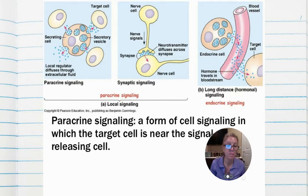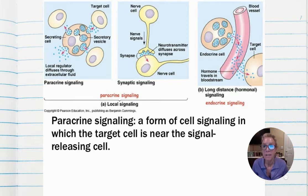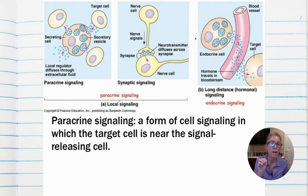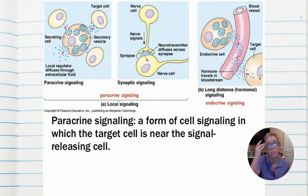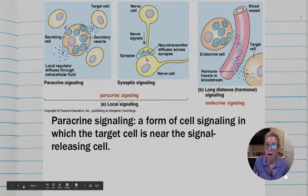Here's another example of signaling types. Paracrine signaling impacts only neighboring cells. A synapse between two neurons is very short distance. Whereas endocrine signaling is over a longer distance — something from your pituitary gland impacting your gonads, for example.